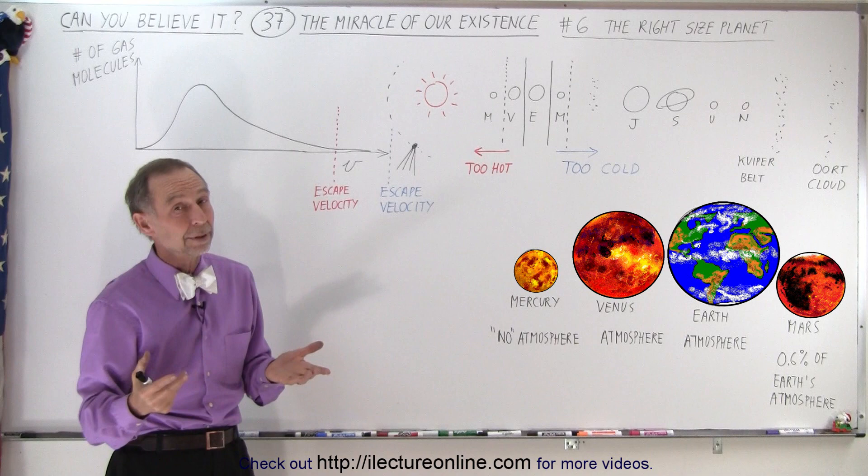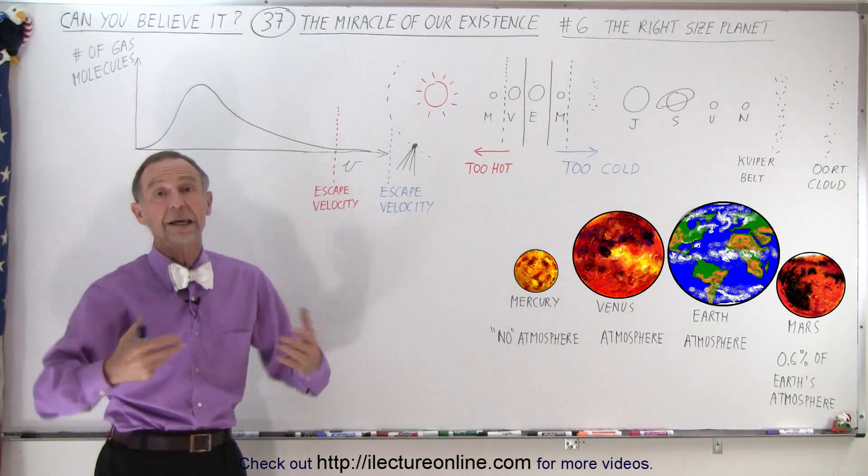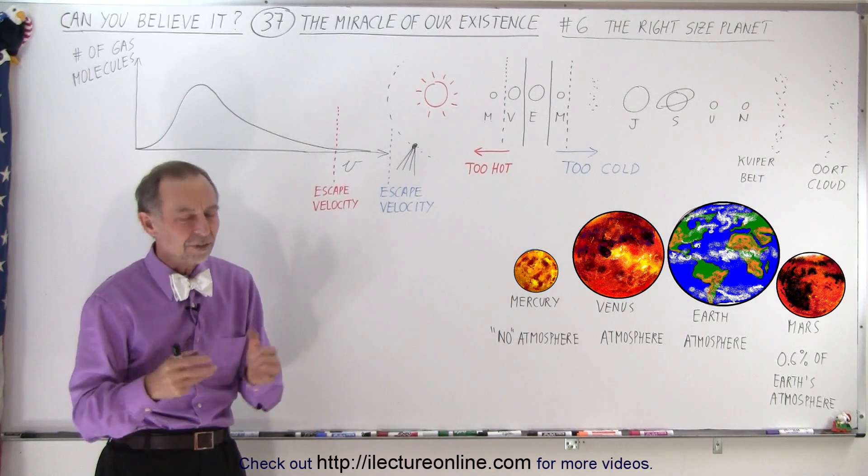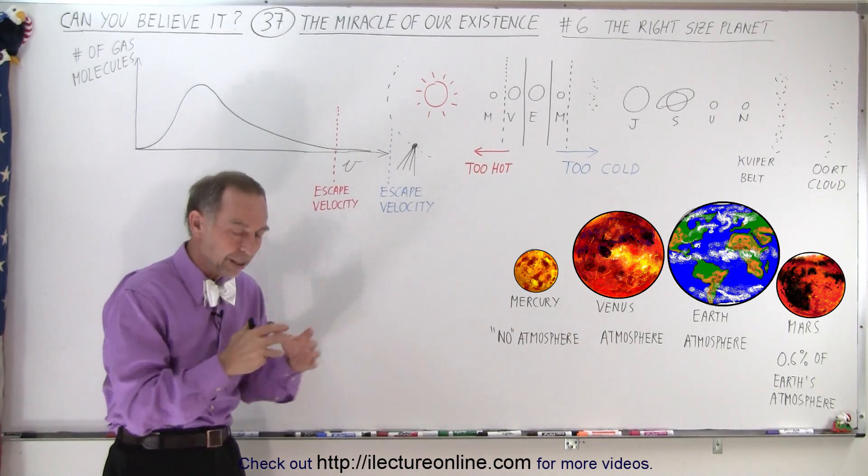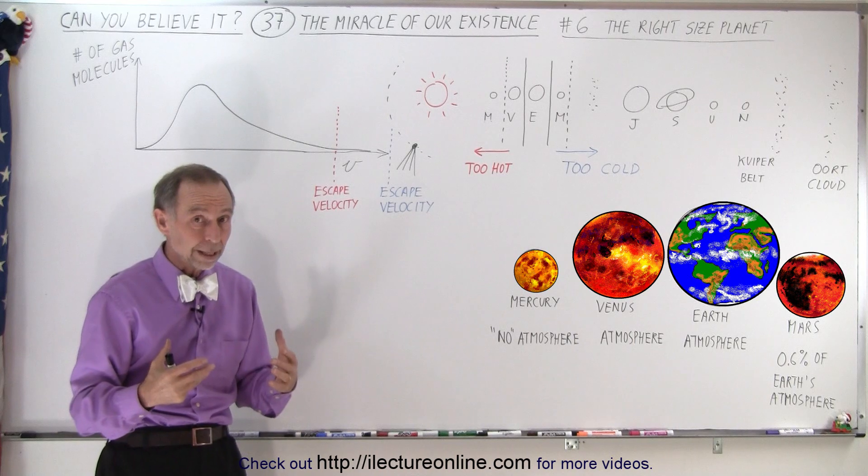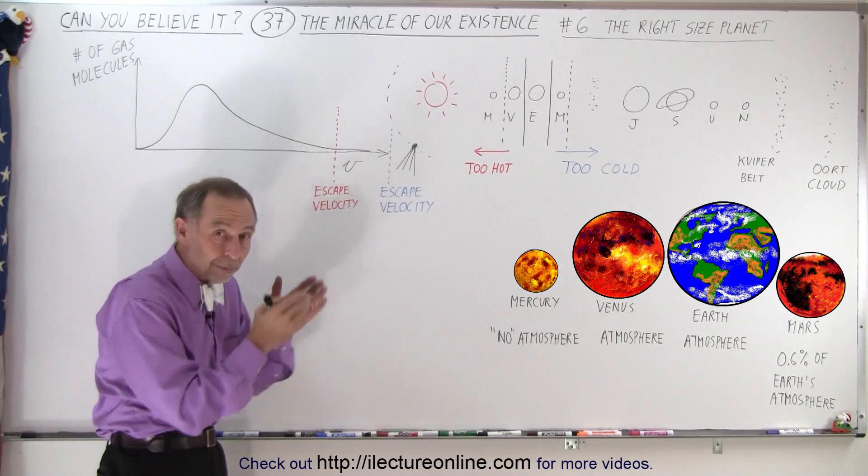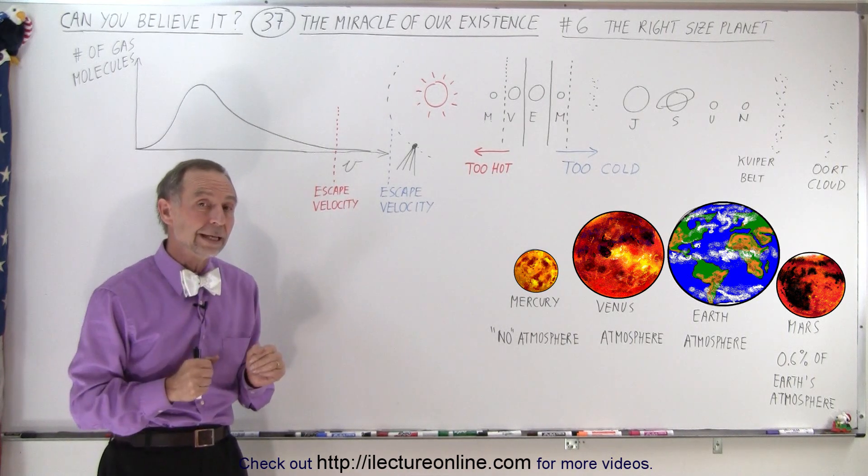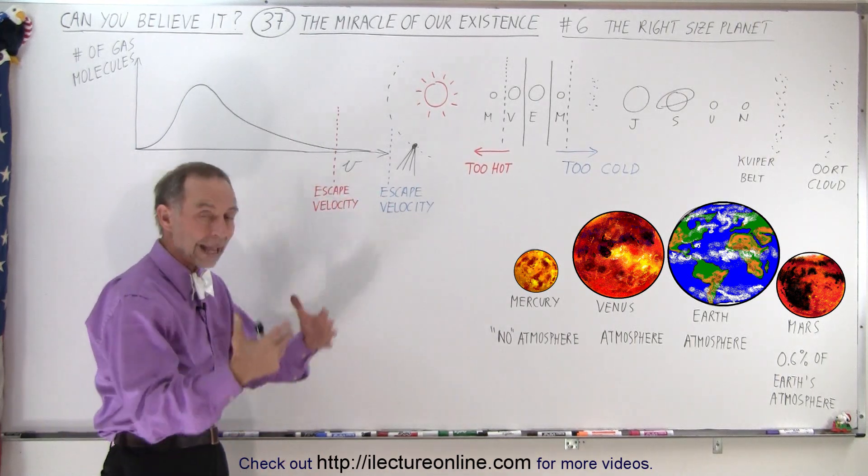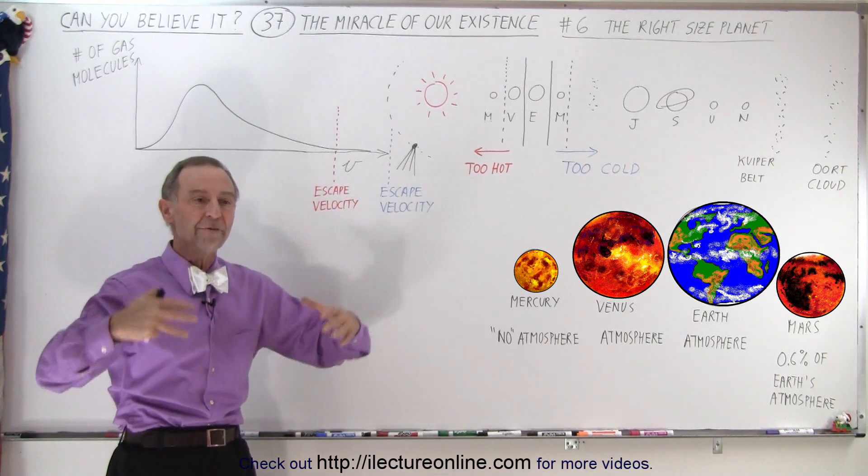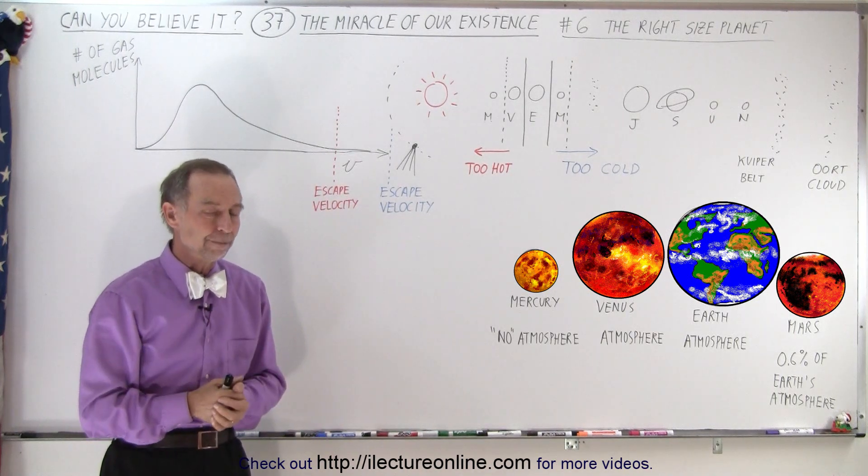And all has to happen on terrestrial planets, which to begin with, are very rare. So you can see that more and more you begin to see that the Earth is a special place that happens to be a terrestrial planet, that happens to be right in the Goldilocks zone, and that happens to be the right size, so it enables the Earth to hang on to its atmosphere and provide the protection that we need with that atmosphere.